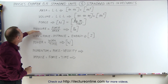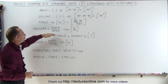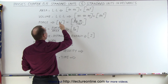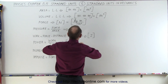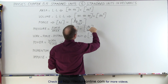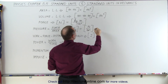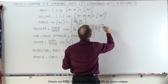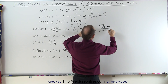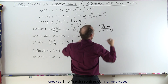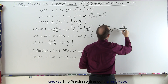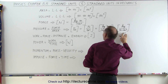Pressure is defined as force divided by area, which has the units of pascals. Pascals can be broken into newtons divided by meters squared, written as newtons per meter squared. Since newtons equal kilograms times meters per second squared, and we still have the meter squared in the denominator, one meter cancels out, leaving kilograms per meter times second squared as the basic units of pressure.